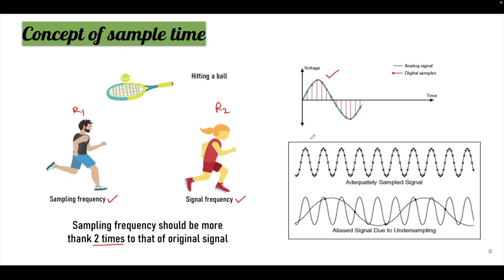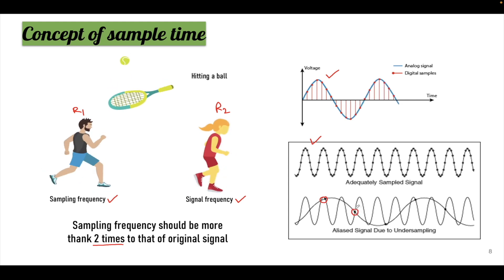Again consider this example. Suppose you have this sine wave which is repeating over time. If you want to sample at a slower rate then you will not be able to extract the exact information that is inside the signal. So suppose you want to connect these collected points, then it will end up creating this signal which is not the exact signal.